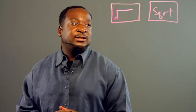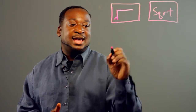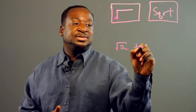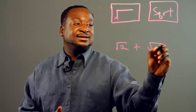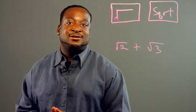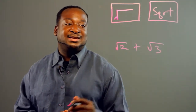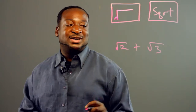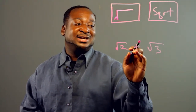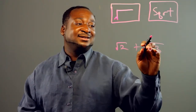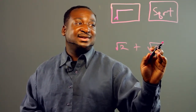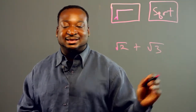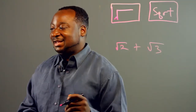Let's say you wanted to add the root of two plus the root of three. You would simply hit two, then the square root button, plus three, and then your square root button. And then you'll come out with your answer.